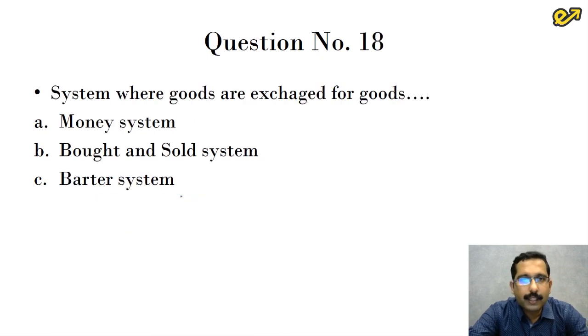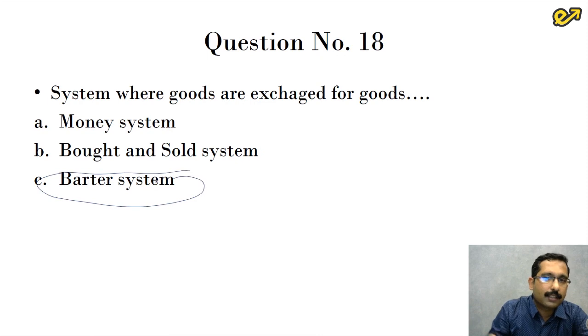Question number 18, system where goods are exchanged for goods. Very simple. It is again a lottery question for us. If such questions come, you should make sure that you don't lose marks. And the answer for this is barter system. We have been learning this since ages. When goods are exchanged for goods, such a system is called barter system.